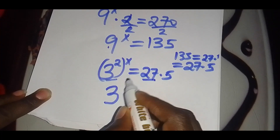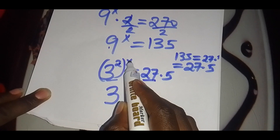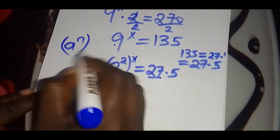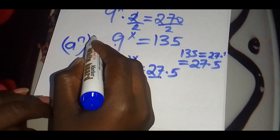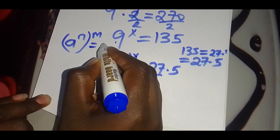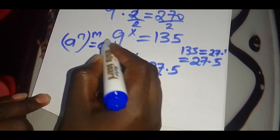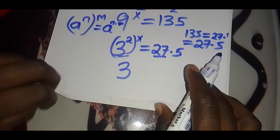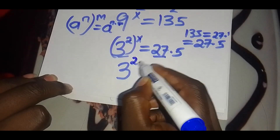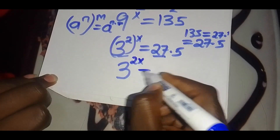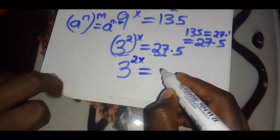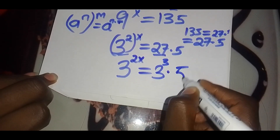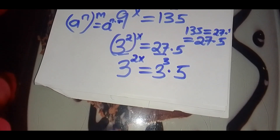So we'll have 3 raised to the power 2x. Remember, if you have a raised to power n multiplied by a raised to power m, this can be expressed as a raised to the power n times m. So now we're going to have 3 raised to the power 2x equals 3 raised to the power 3, multiplied by 5.